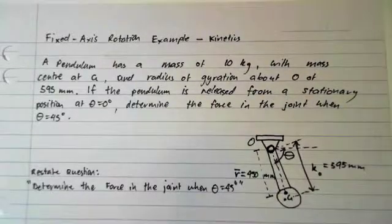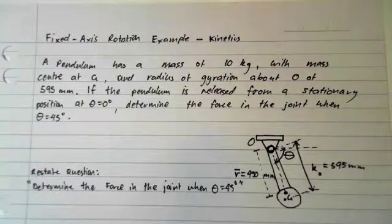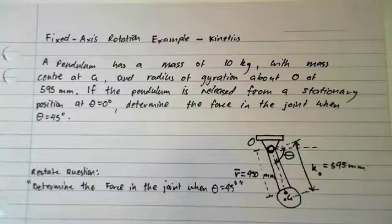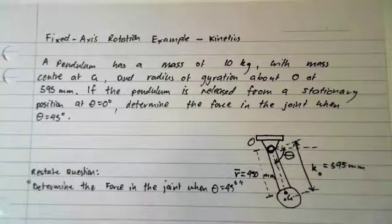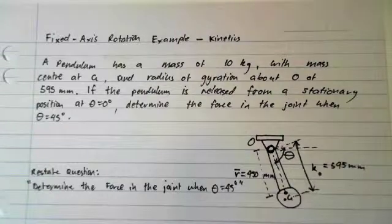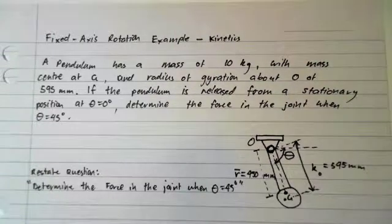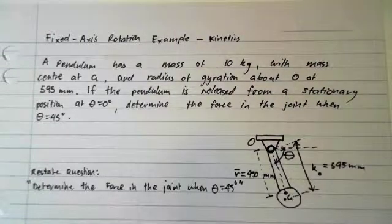Hey everyone, this is a fixed axis rotation example from kinetics. It says that a pendulum has a mass of 10 kilograms with the mass center at g and the radius of gyration about O of 595 millimeters.